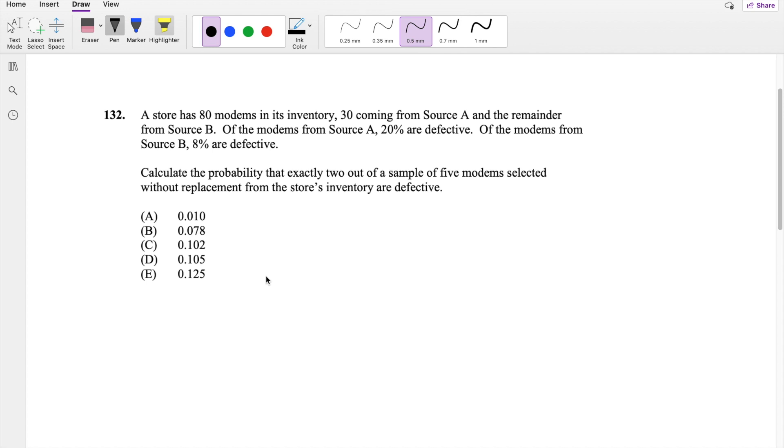So a store has 80 modems in its inventory, 30 coming from source A, and the remainder coming from source B, so 50. Of the modems from source A, 20% are defective. And of the modems coming from source B, 8% are defective. So, calculate the probability that exactly 2 out of 5 are defective. And this is without replacement.